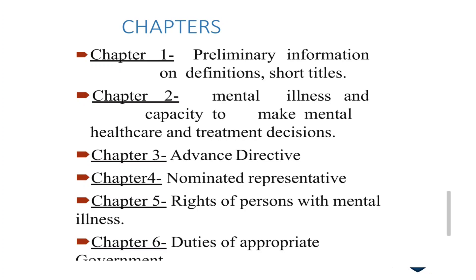Chapter 3 is on advanced directives, already explained previously. Chapter 4 covers nominated representatives — who the patient nominates to look after them, manage their property, or act as guardian. Chapter 5 covers the rights of persons with mental illness — human rights apply to everyone regardless of wealth or health condition, and that includes mentally ill patients.